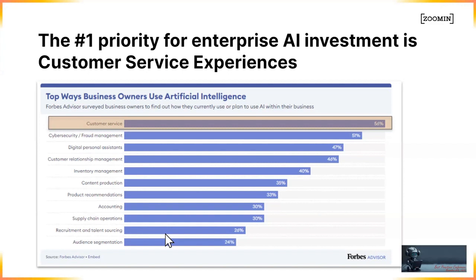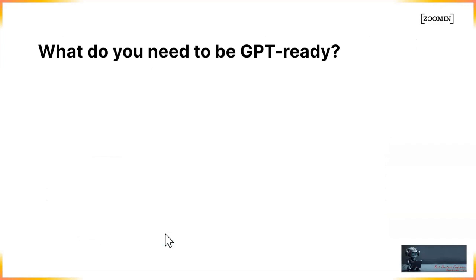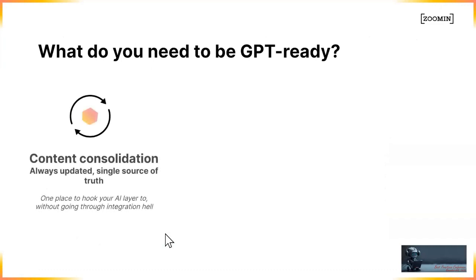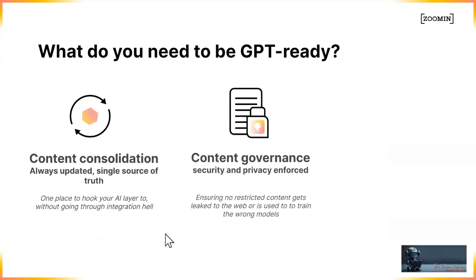We need to take that responsibility and figure out how to help our companies make good use of content combined with AI to provide better services. When we talk about what you need to get GPT-ready, there are three basic things: first, consolidating content — documentation of different formats, but also knowledge articles, training materials, and API content — to hook into the AI layer.